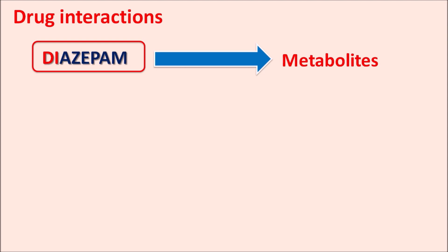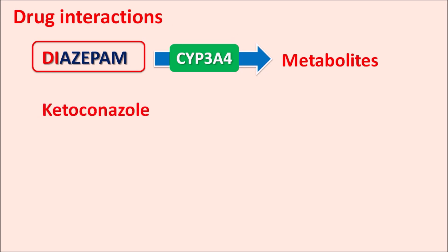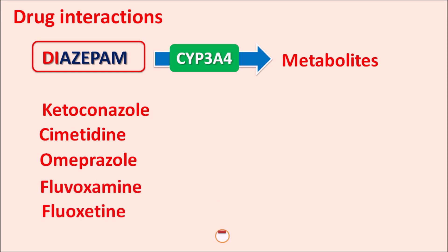The metabolism of diazepam is mainly controlled by the CYP3A4 enzyme. Drugs such as ketoconazole, cimetidine, omeprazole, fluvoxamine, and fluoxetine are potent inhibitors of CYP3A4. In the presence of these drugs, metabolism of diazepam is reduced, resulting in increased levels and toxic effects such as severe dizziness, drowsiness, respiratory depression, severe sedation, and even death. Care should be taken when these strong CYP3A4 inhibitors are given along with diazepam.